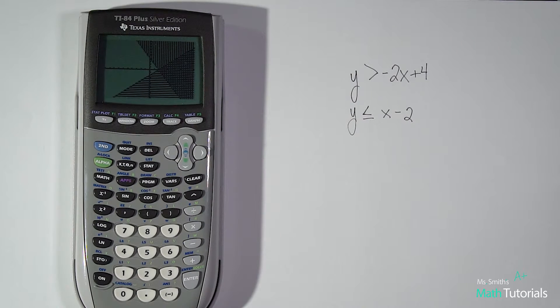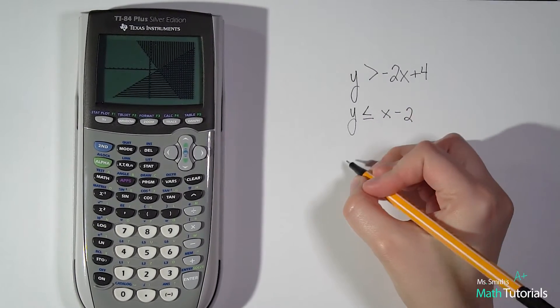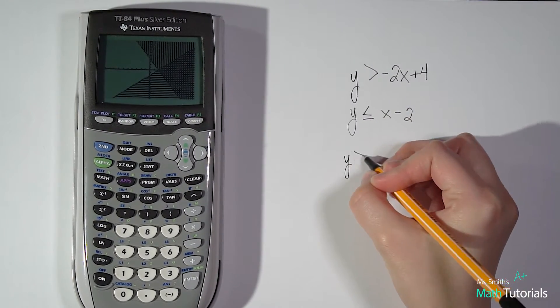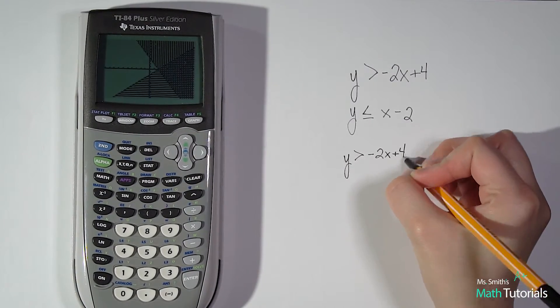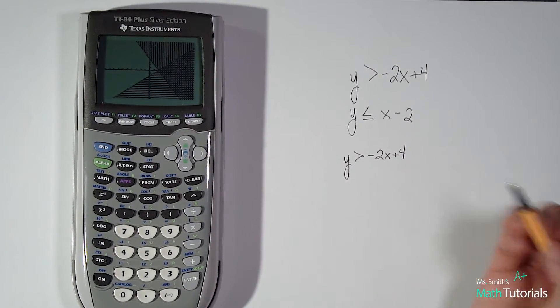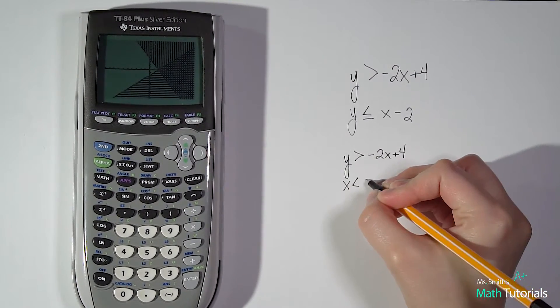So you'll see there's my shading and I can clearly see my overlapping here of where my solutions would be. Now, one other limitation of the calculator that I do want to point out. Let's say that we had the same top equation. Okay, so we had y is greater than negative 2x plus 4.